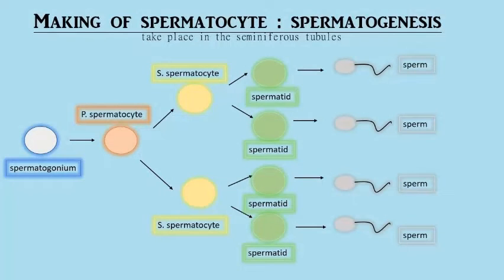Here's a diagram of the making of the spermatocyte, also known as spermatogenesis. Spermatogenesis takes place in the seminiferous tubules. It starts from a spermatogonium — a cell produced early in the formation of spermatozoa, formed in the wall of the seminiferous tubules. From the spermatogonium, it forms into a primary spermatocyte, which with the help of meiosis forms into two secondary spermatocytes. Then from the two secondary spermatocytes, with the help of meiosis again, it forms into spermatids.